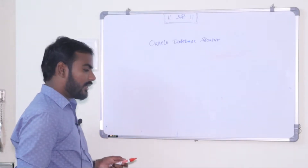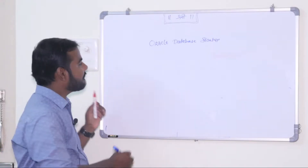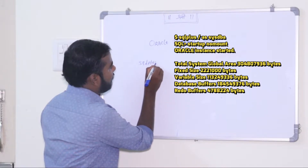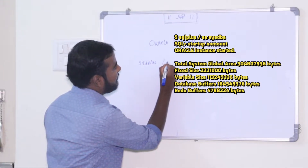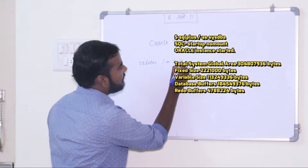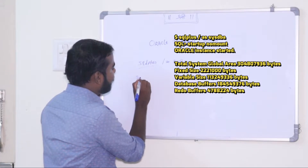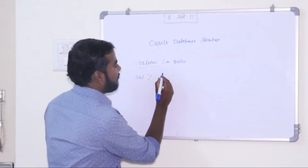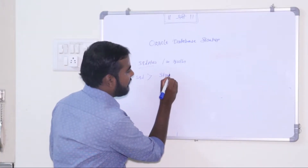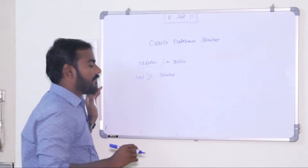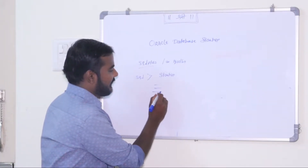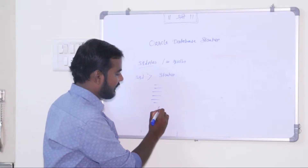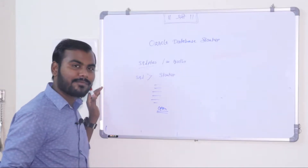In order to start the database, we open the command prompt and fire the command: sqlplus / as sysdba. After that the SQL prompt opens and then we use the command: startup. After firing that command, you will see a message and find that the database has started and gone into the open stage.